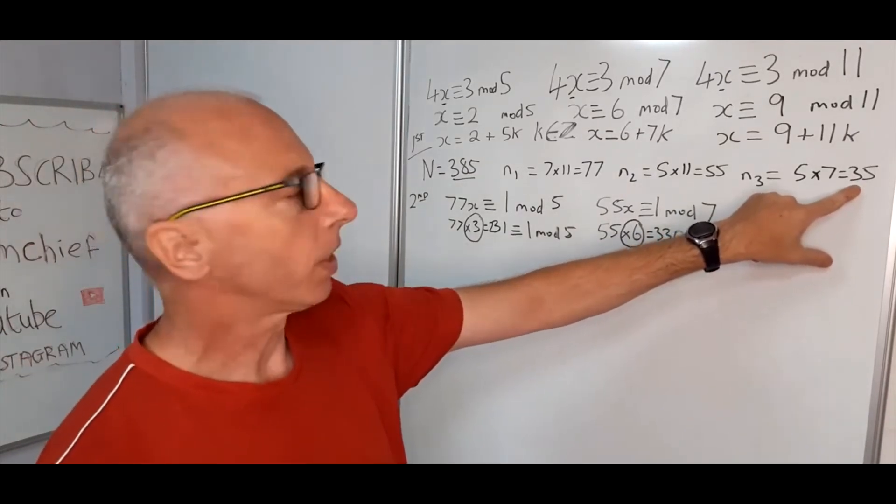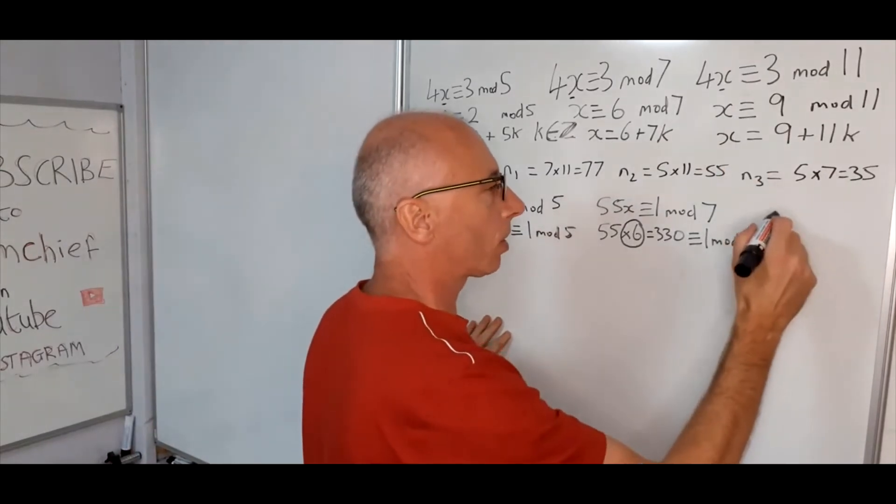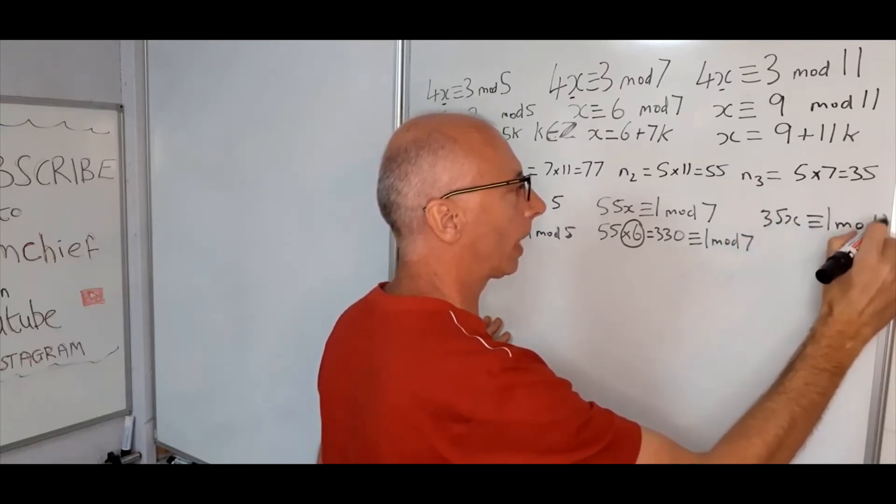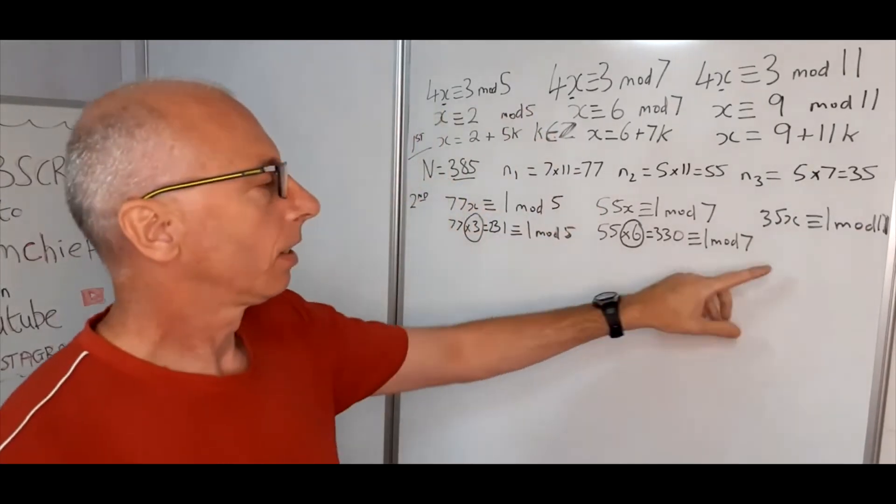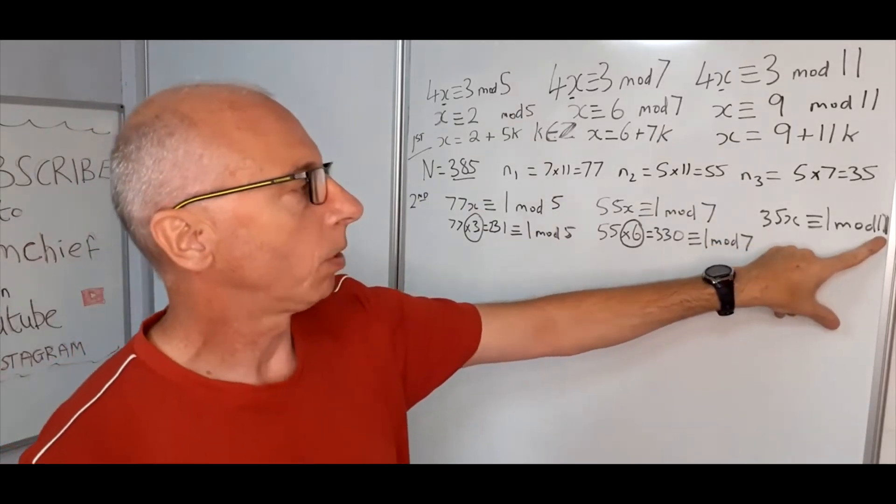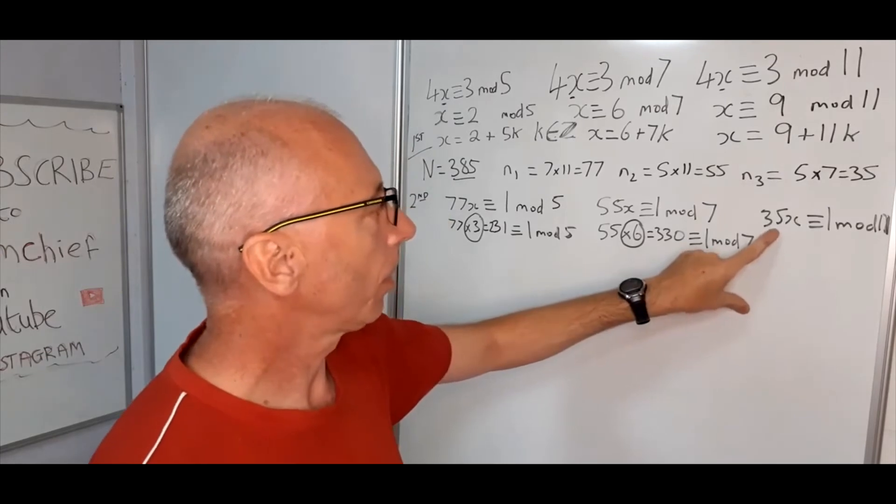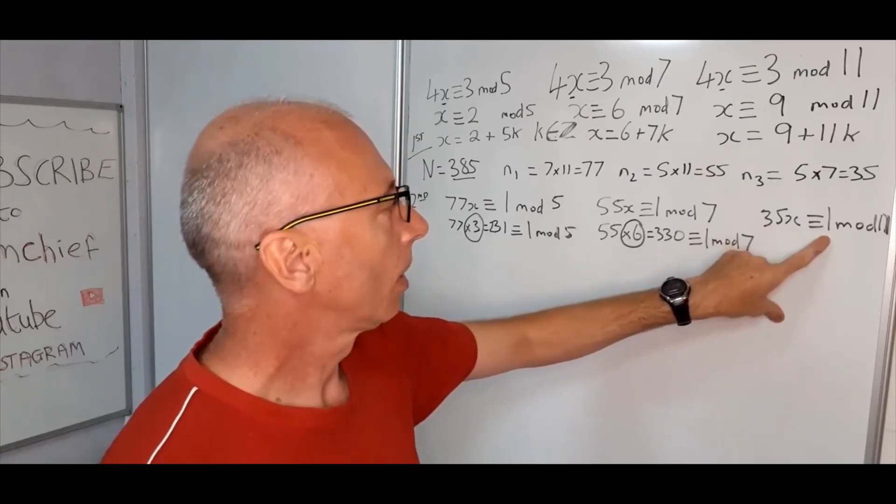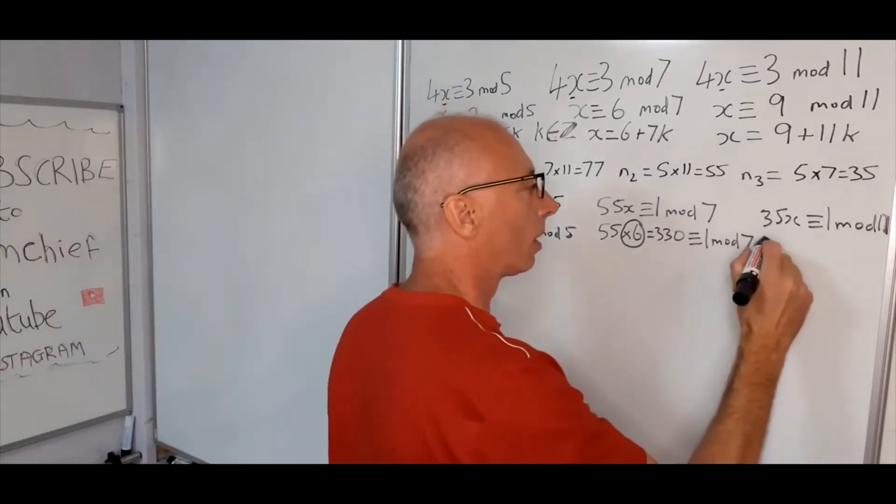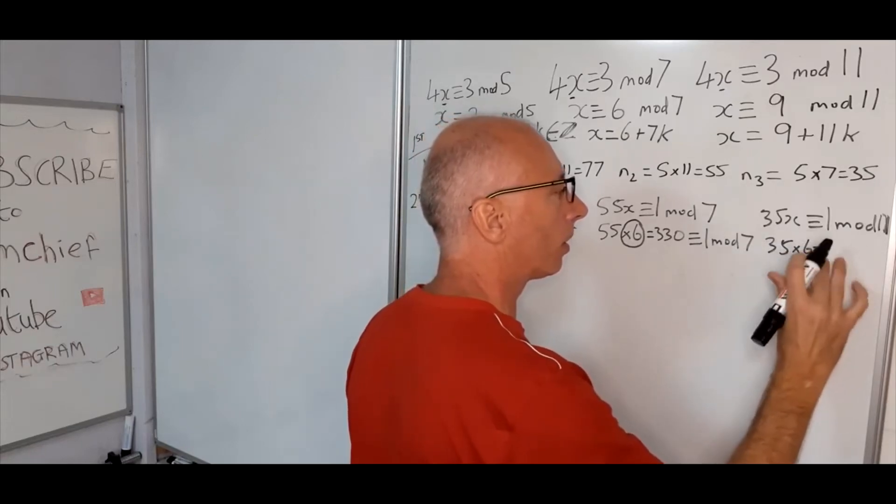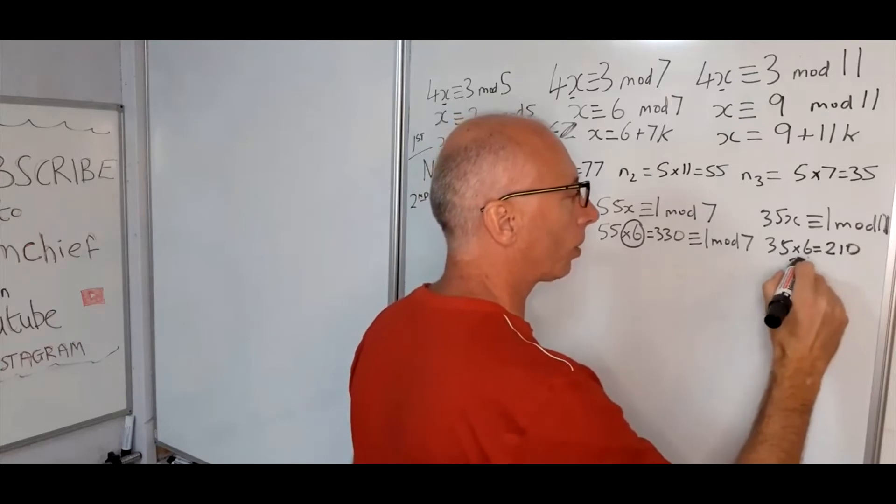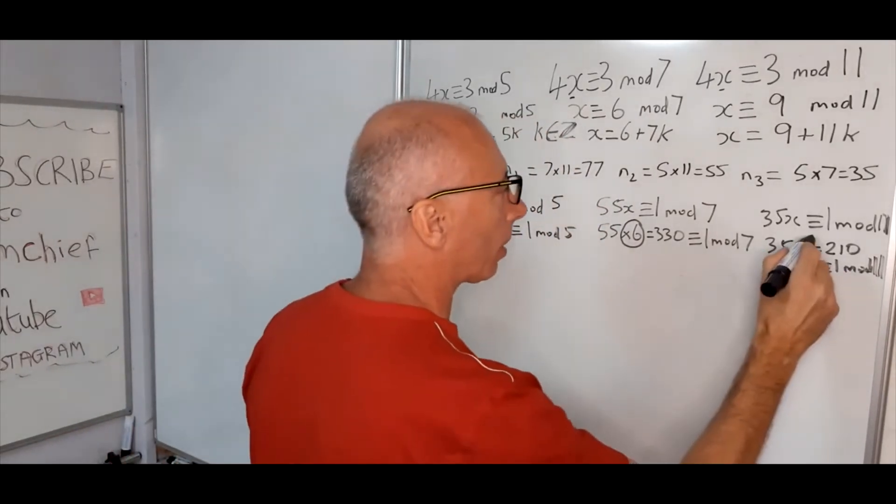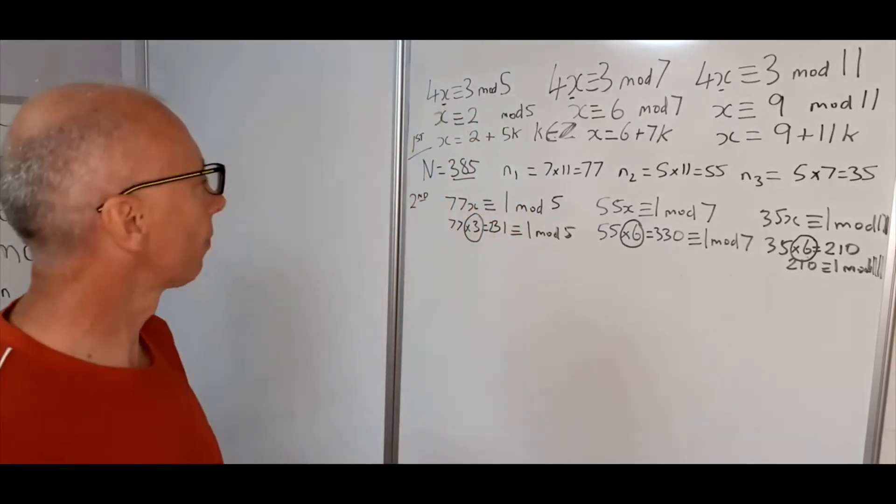And now for the last one, we need the multiplicative inverse of 35 mod 11. So we need 35x is congruent with 1 mod 11. So again, just multiples of 35, that's congruent with 1 mod 11. Anything that divides by 11 is pretty easy to see. So 35, 70, 105, 140, 175, 210, that looks good. So 35 times 6 is 210. And 210 is congruent with 1 mod 11. So here we go. 6 is our multiplicative inverse.